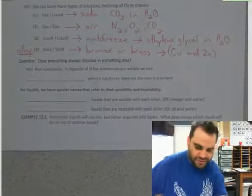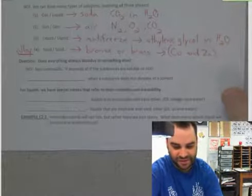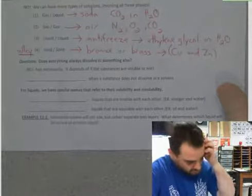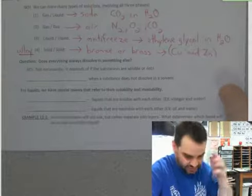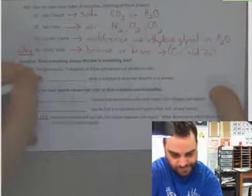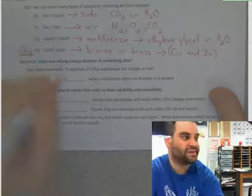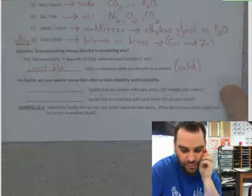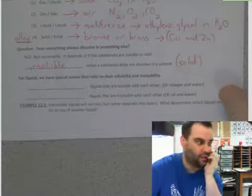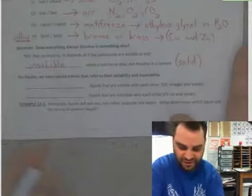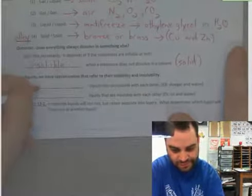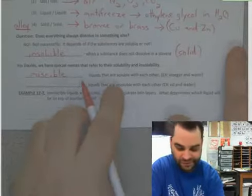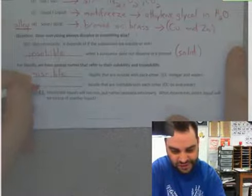Does everything always dissolve in something else? The answer is no. Not necessarily. Depends on if the substances are soluble or not. Depends on the polarity of the substances. So, when a substance is not dissolved in a substance, this is what we call insoluble. When we're doing liquids, if they dissolve in each other, the term we use is miscible. If they do not dissolve in each other, like oil and water, these are immiscible.